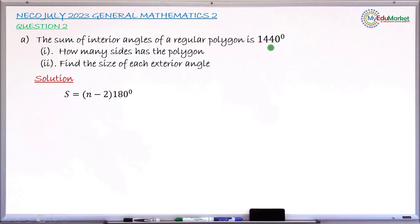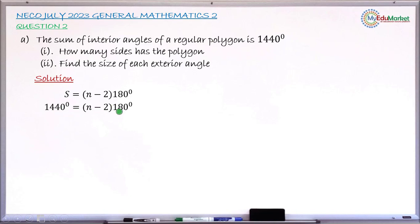The sum S is given as 1440 degrees, and we are asked to find the number of sides, which is N. Substituting S by 1440, we now have: 1440 equals (N minus 2) multiplied by 180 degrees.